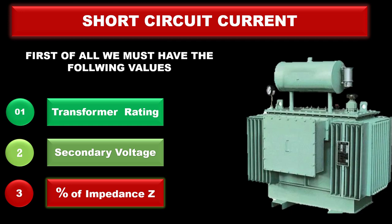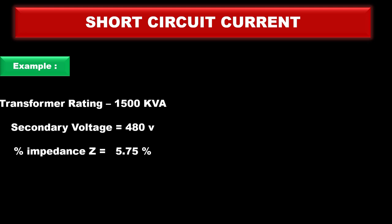For better understanding, let's see an example. We have a transformer with rating of 1500 kVA, secondary voltage of 480 volts, and we suppose the transformer impedance is 5.75 percent.